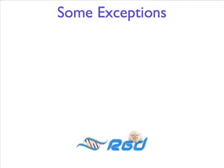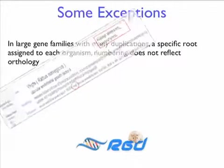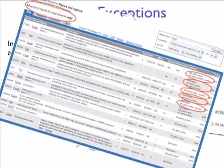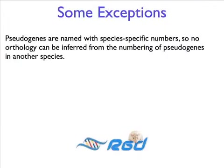There are some exceptions to the rules of gene nomenclature. One exception is the case of very large gene families. Some families have so many gene duplications that orthologs are nearly impossible to determine. In such cases, like vomeronasal receptors, the names may be identical, but the symbols given to the genes from different species are different, so gene names with the same hierarchical numbers won't be mistaken for orthologs. Similarly, pseudogenes are named with species-specific numbers, so no orthology can be inferred from the numbering of pseudogenes in another species.